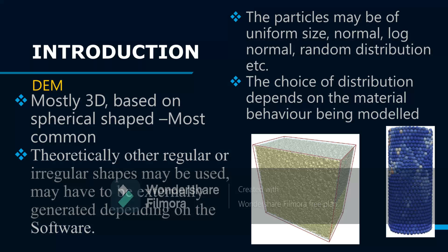DEM is mostly 3D — of course a sphere, since a particle is spherical, is 3D, and it needs time to calculate. The particles are mostly spheres; that is the most common and most convenient shape. However, theoretically you can have other regular or irregular shapes, though these require additional effort to generate depending on the software you intend to use.